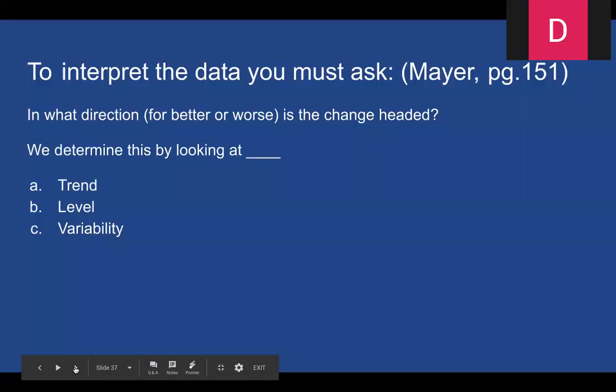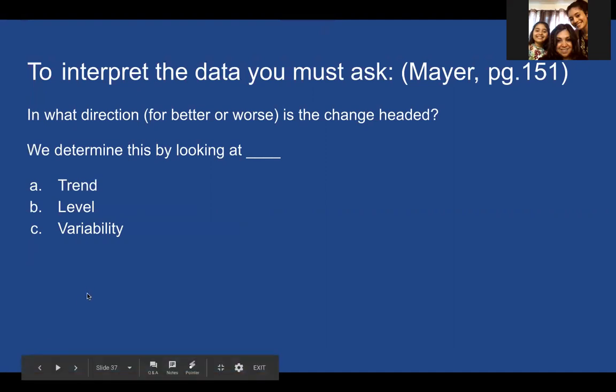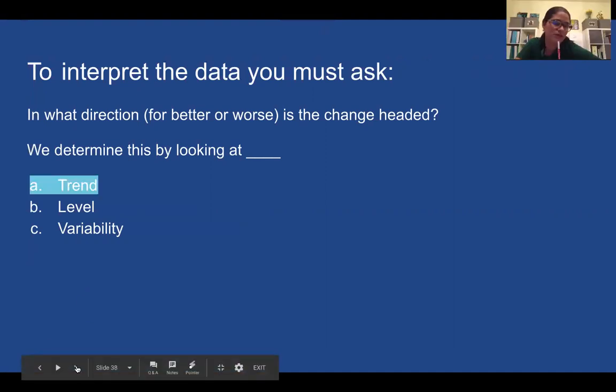To interpret the data you must ask, this is what Mayer says: In what direction, for better or worse, is the change headed? We determine this by looking at trend, level, or variability. Trend. It's going in direction. Good job guys.